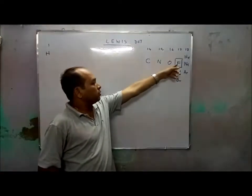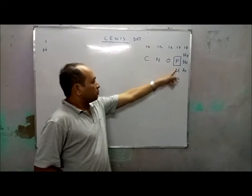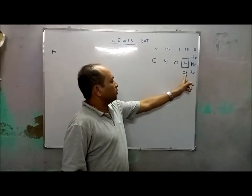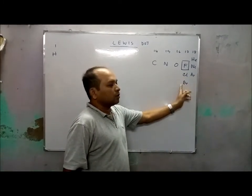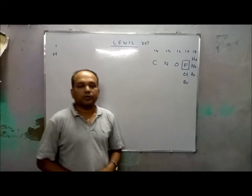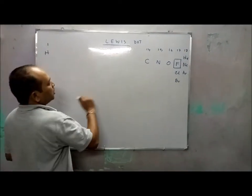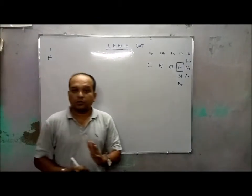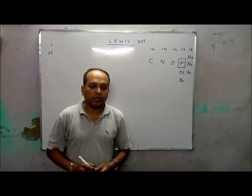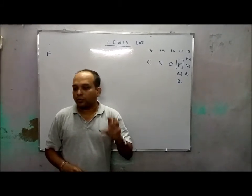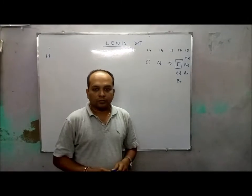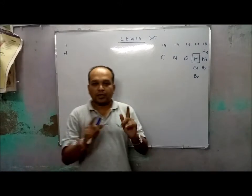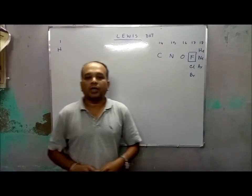A similar thing happens when we go down along the group — the electronegativity decreases. When a compound is formed between two non-metals, the element which has less electronegativity should be taken as the central atom.